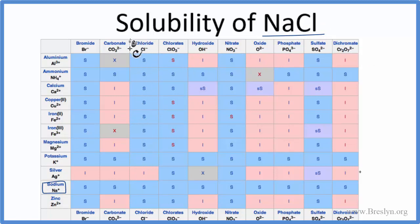We go down to where it intersects. So there's our chloride. We go down. It intersects with sodium right here. And that means that it's soluble. That S means soluble. So sodium chloride is soluble based on our table.